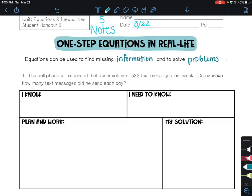Number one, the cell phone bill recorded that Jeremiah sent 532 text messages last week. On average, how many text messages did he send each day? So right away, I saw the total that he sent, and this was in a week. And then I saw that at the end, they asked for each day.